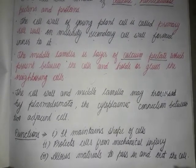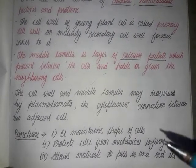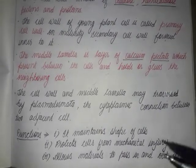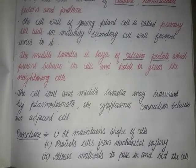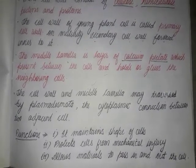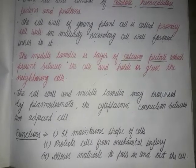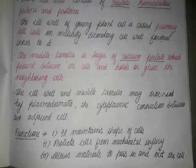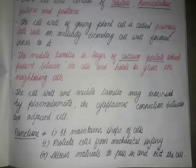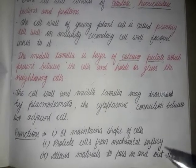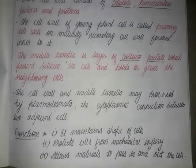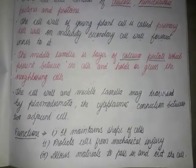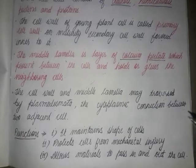The cell wall protects the cell from mechanical injury. It also protects the cell from the attack of pathogens — such as viruses, bacteria, fungi, and protozoans — because it is hard, preventing their entry and protecting the cell.